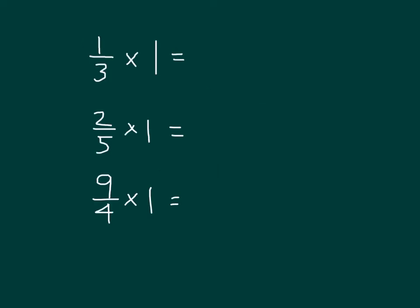If I were to multiply a fraction by 1, of course I would still get that same fraction. Now the other thing that I can do is I can express that 1 in other ways. For instance, with the 1 third times 1, I could express that 1 as 4 fourths if I wanted to.